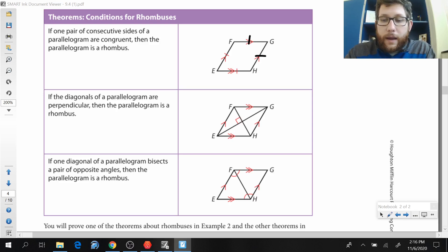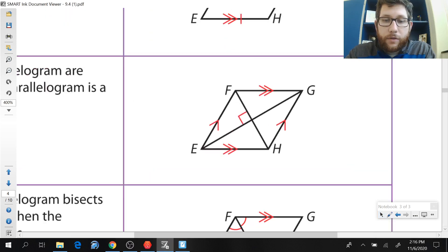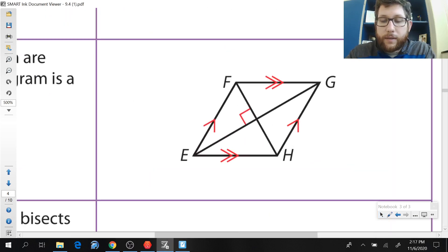Another way I could tell that my parallelogram has to be a rhombus is if the diagonals are perpendicular. Now let's zoom in here and let's take a look at this guy. So let's think about these shapes, these triangles. If I know that this is perpendicular, I also happen to know that this angle up here is congruent to this one. Those are alternate interior. And I happen to know that this is perpendicular, and this is perpendicular, and that's perpendicular. Those are all 90 degrees, right?